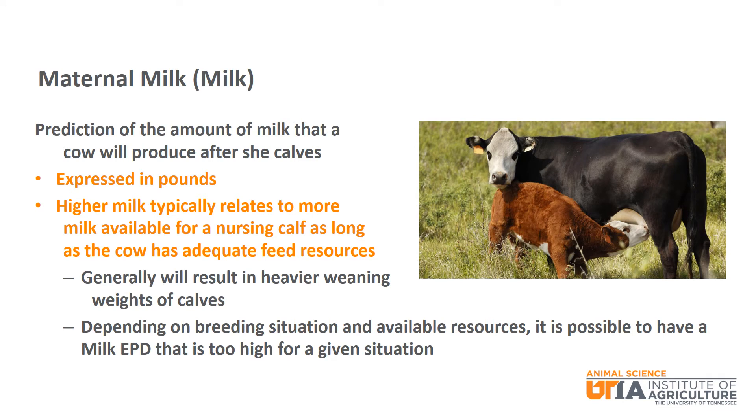The maternal milk EPD is a prediction of the amount of milk that a cow will produce after she calves, expressed in pounds. A higher maternal milk EPD typically relates to more milk available for a nursing calf, as long as adequate feed resources are provided for the cow, which will generally result in higher weaning weights. Please remember that depending on the breeding situation and available resources, it is possible to have a maternal milk EPD that is too high for a given situation in order to maintain overall productivity of the cow herd.